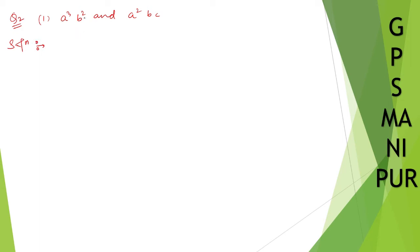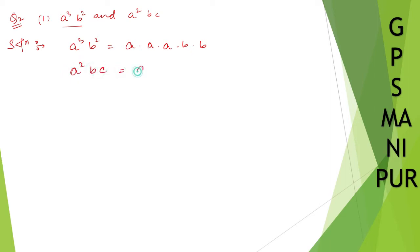So here I can write down the first polynomial a cube b square as a into a into a into b into b. And I can write the second polynomial a square b c as a into a into b into c.